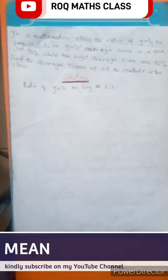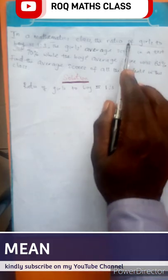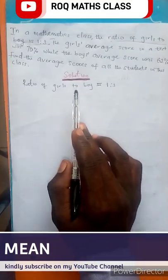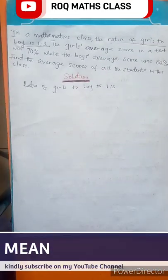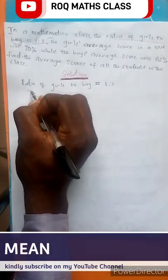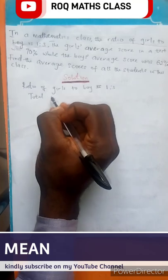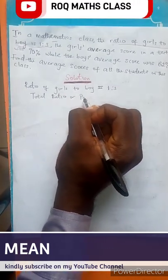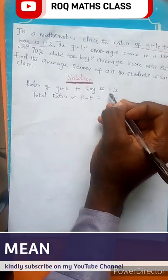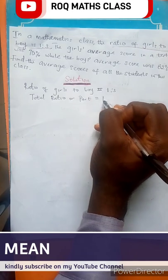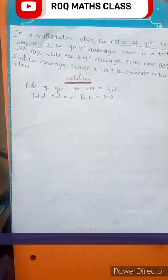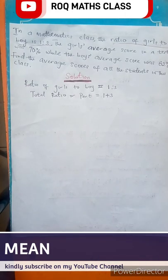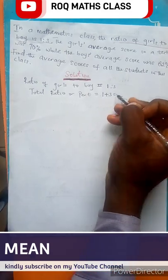The first statement that we are going to be after is the ratio of girls to boys, which is 1 ratio 3. So the ratio of girls to boys is equal to 1 ratio 3. Then the second one is the total ratio, all parts. Now how many parts are there? 1 and 3. So this is the same thing as 1 plus 3, which equals 4. So we have 4 parts.